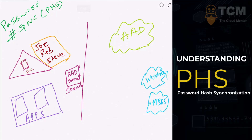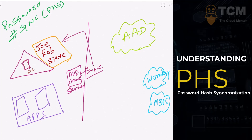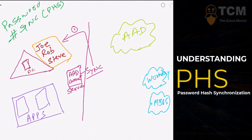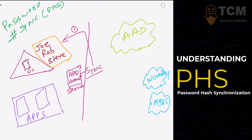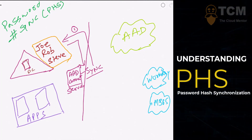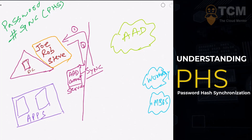Step one: the Azure Active Directory sync engine contacts the domain controller and asks, 'Do you have any replication requests — is there something you want to send to me?' The domain controller responds with any changes that have happened, as far as passwords and attributes are concerned, and that comes as a payload to our Azure AD Connect server.